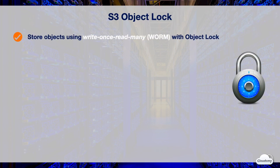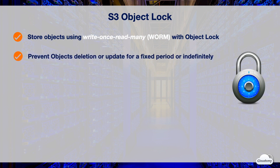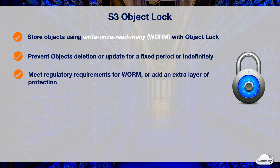You can use S3 Object Lock to store objects using a WORM model. WORM stands for Write Once Read Many — it's an immutable storage where once data is written, it cannot be modified. Object Lock can help you prevent objects from being deleted or overwritten for a fixed time or indefinitely. You can use it to meet regulatory requirements or add an extra layer of protection against object changes and deletion.